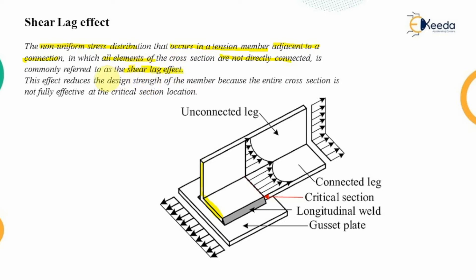This effect reduces the design strength of the member because the entire cross section is not fully effective at the critical section location. In the ideal condition, if both elements were connected, the stress distribution should have been uniform. But because only the connected leg is connected with the gusset plate, the stress is non-uniform.